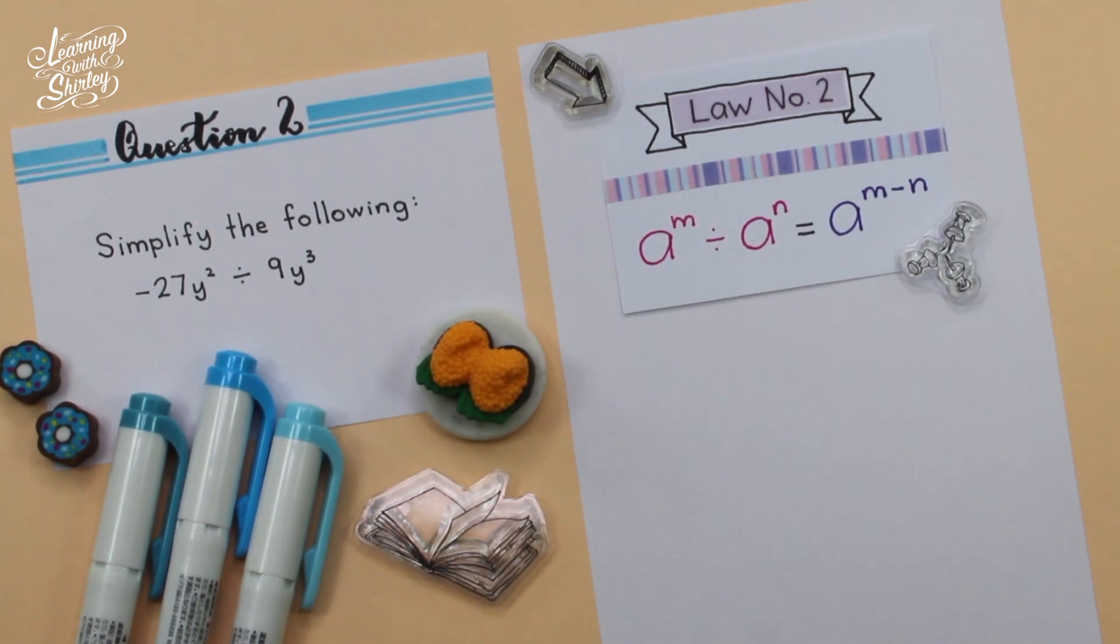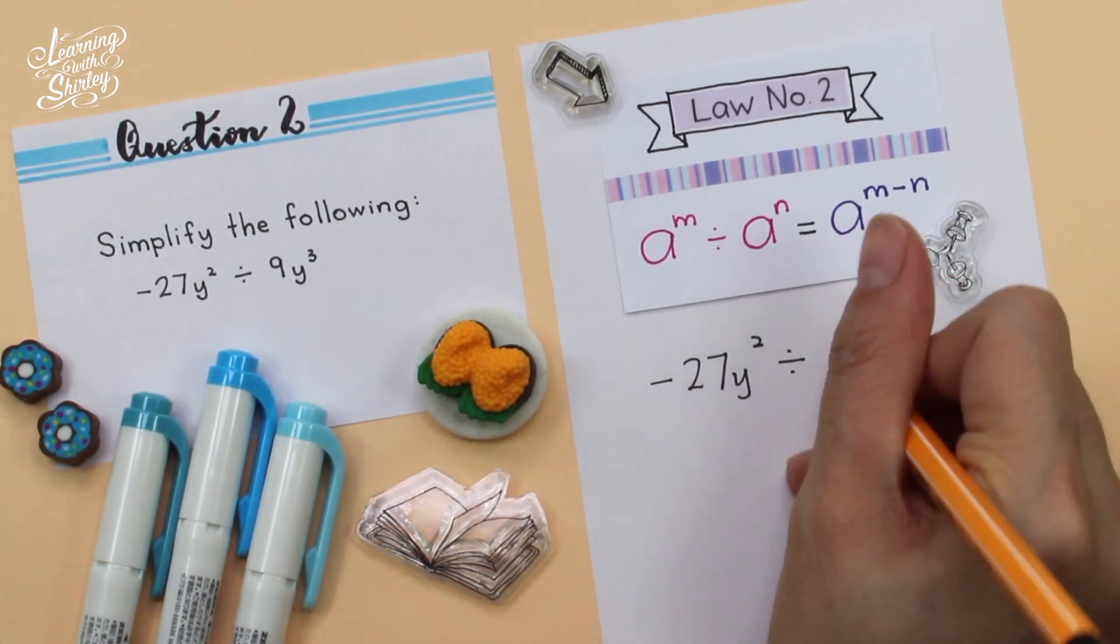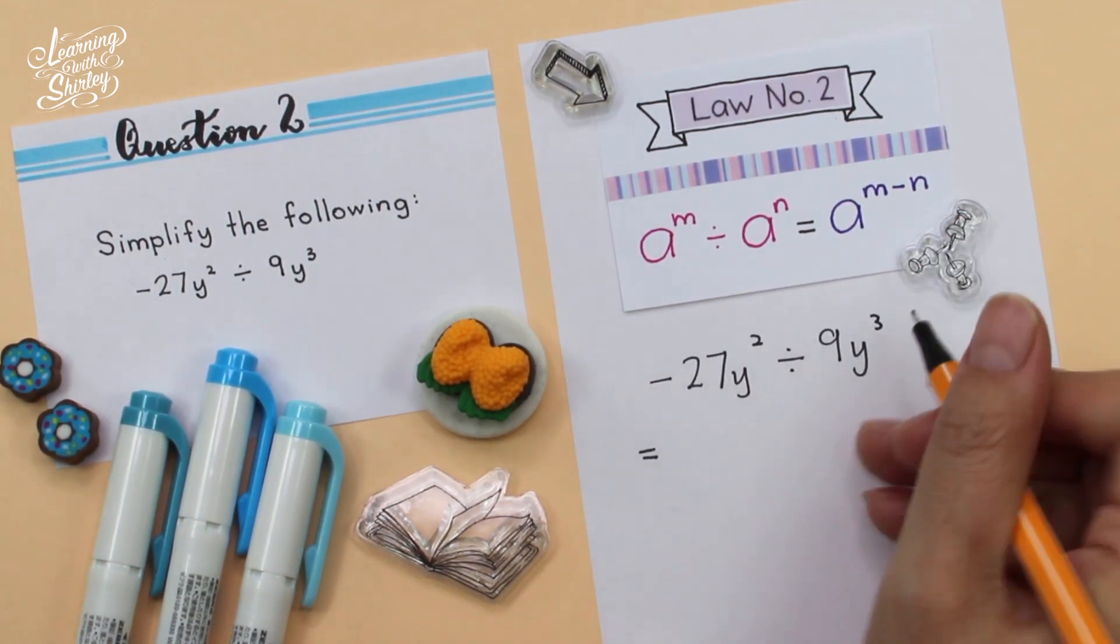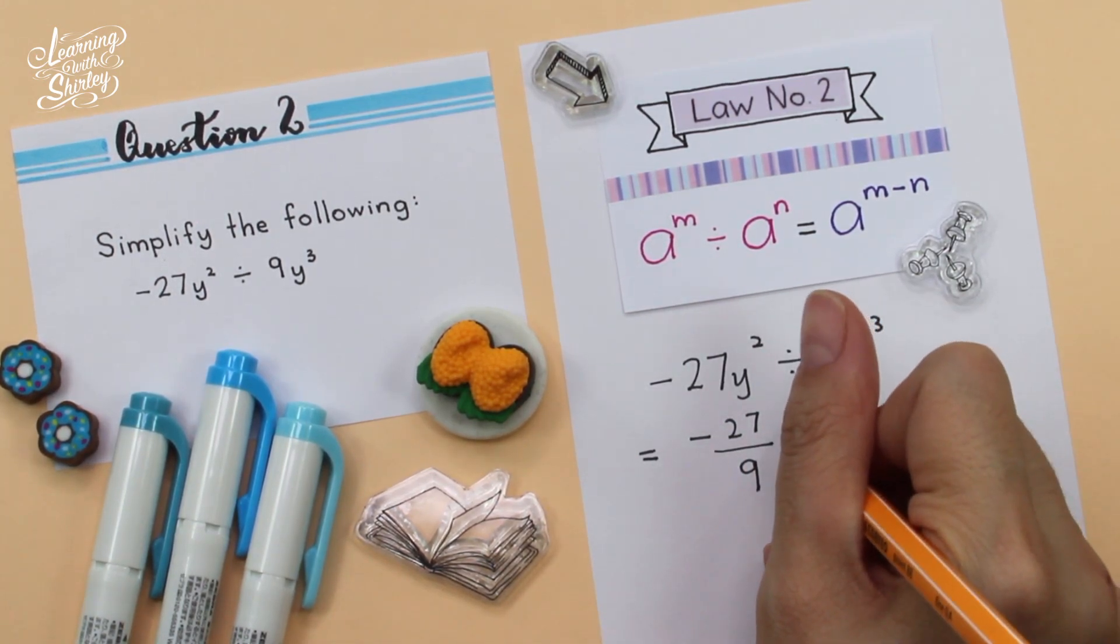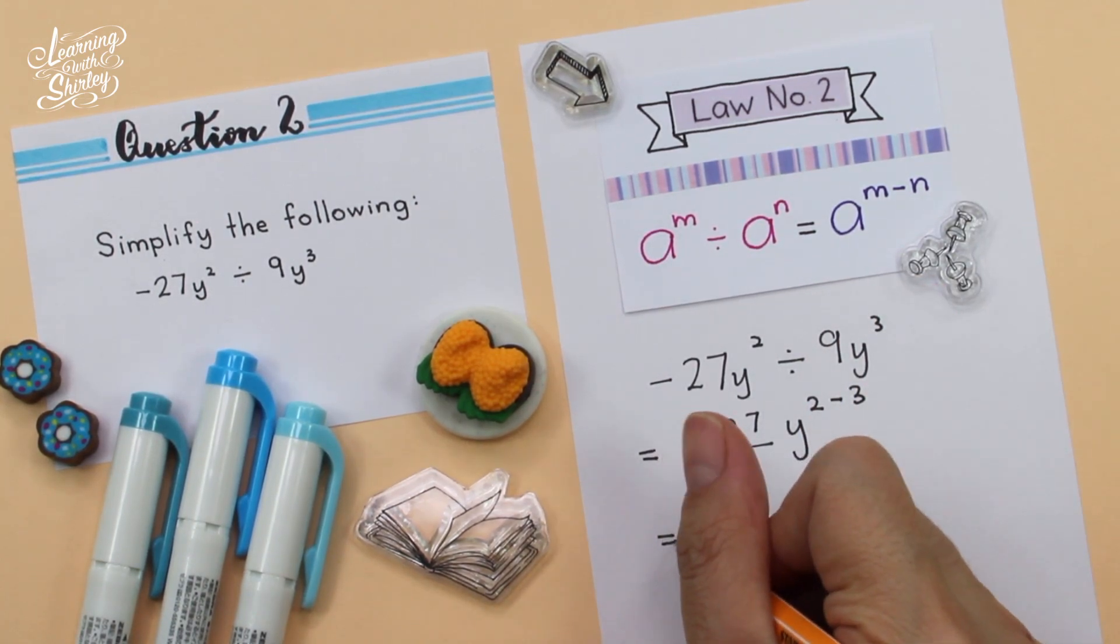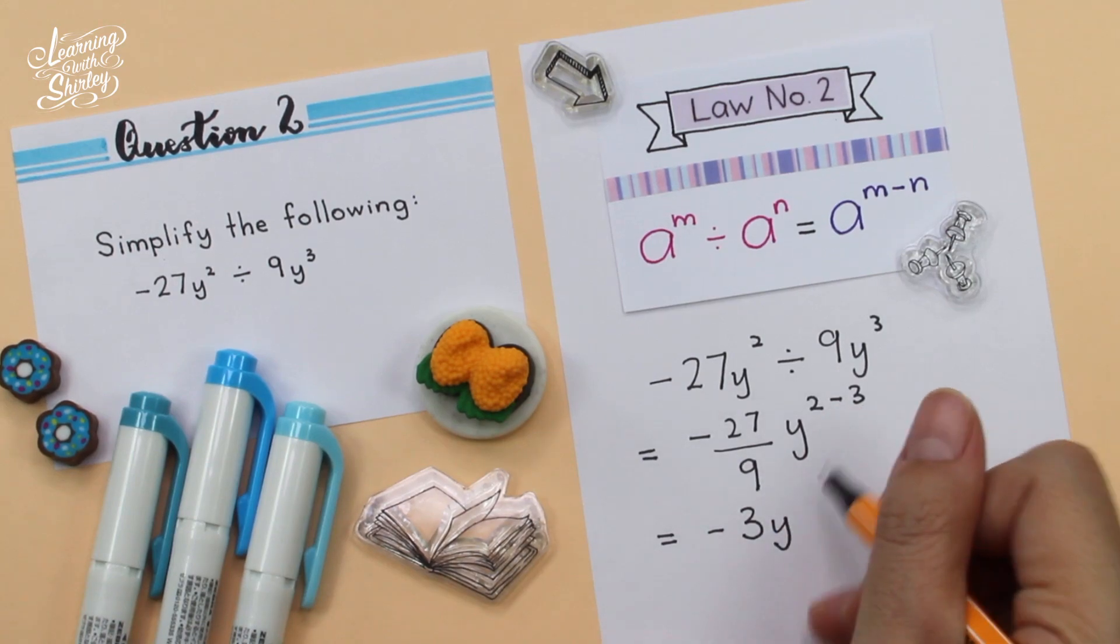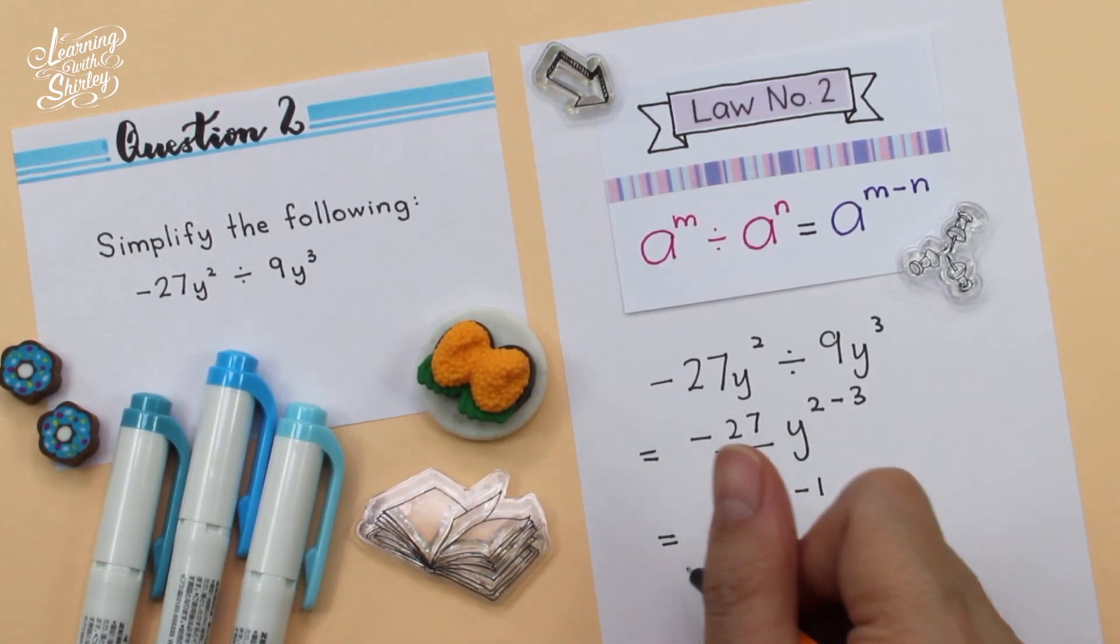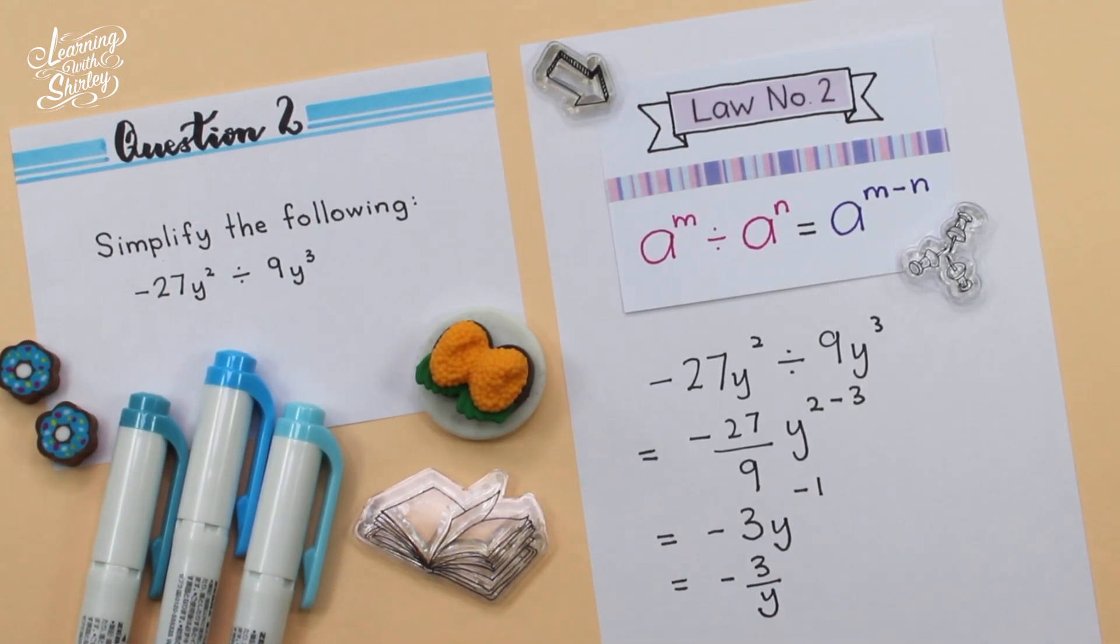First of all, we write down the question given, which is negative 27y square divided by 9y cube. So we divide the coefficients first, which is 27 divided by 9, then we minus the indices, which is 2 minus 3. So equals negative 27 divided by 9 is negative 3, and y power 2 minus 3 is negative 1. So whenever you see a power negative 1, you have to convert to negative 3 over y. So this is the final answer.